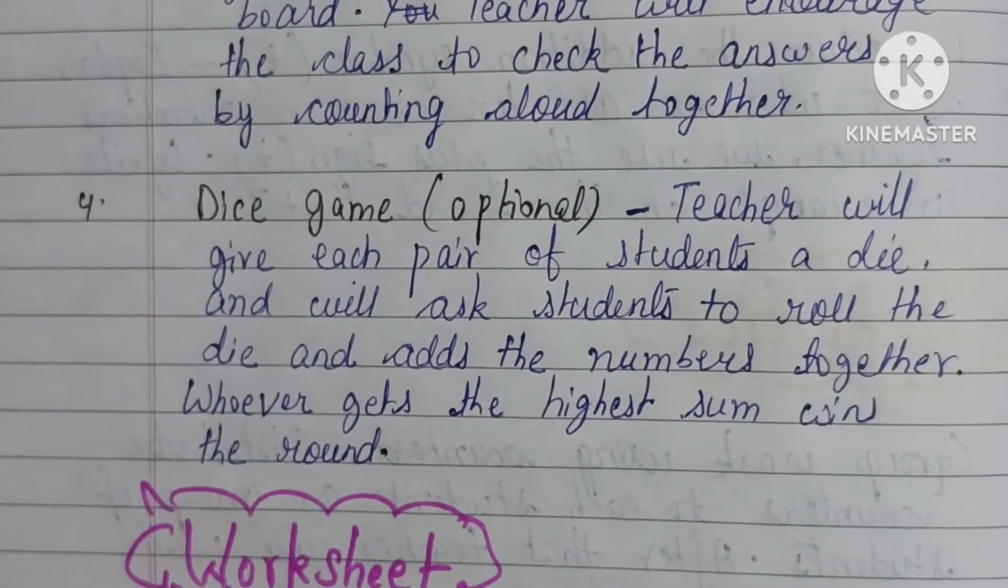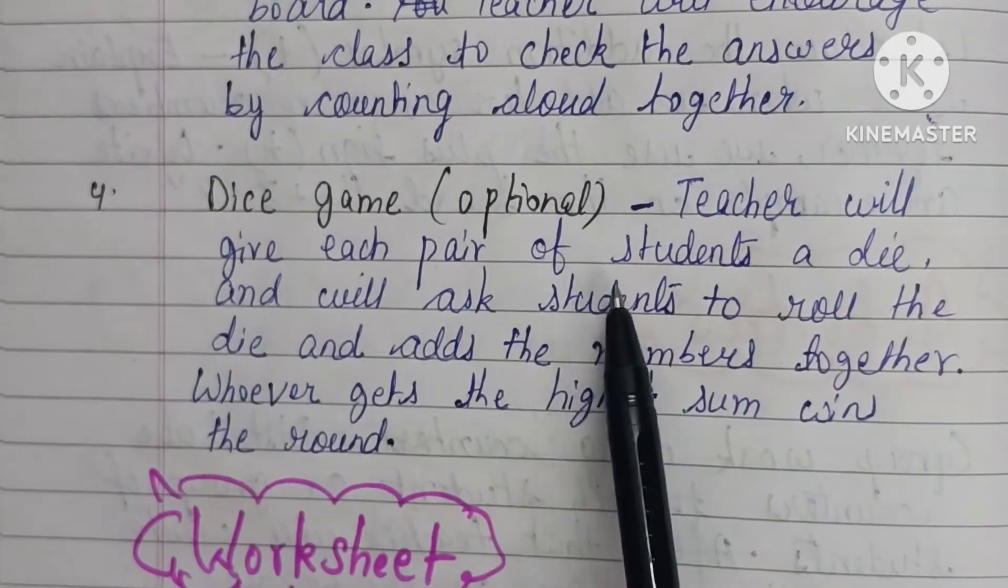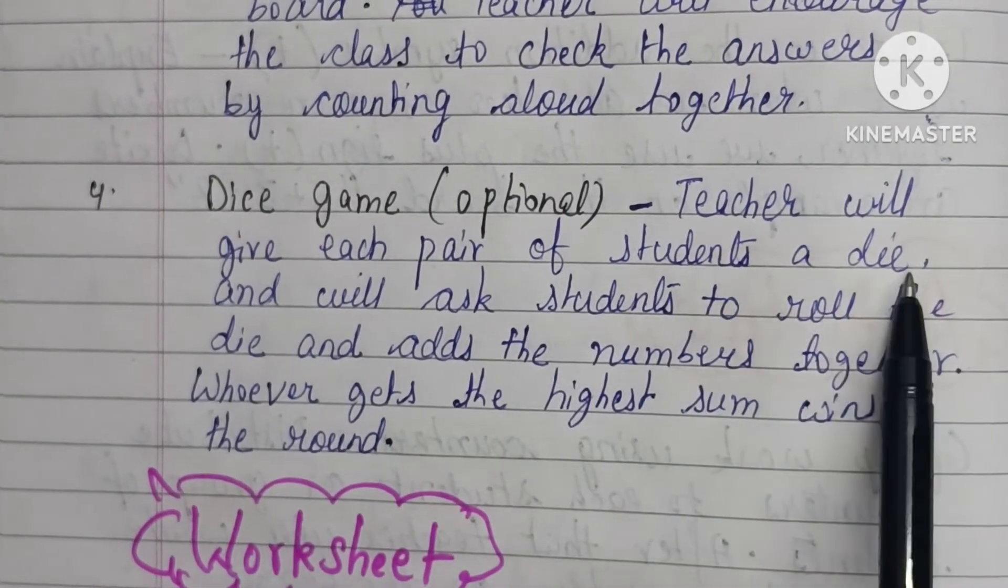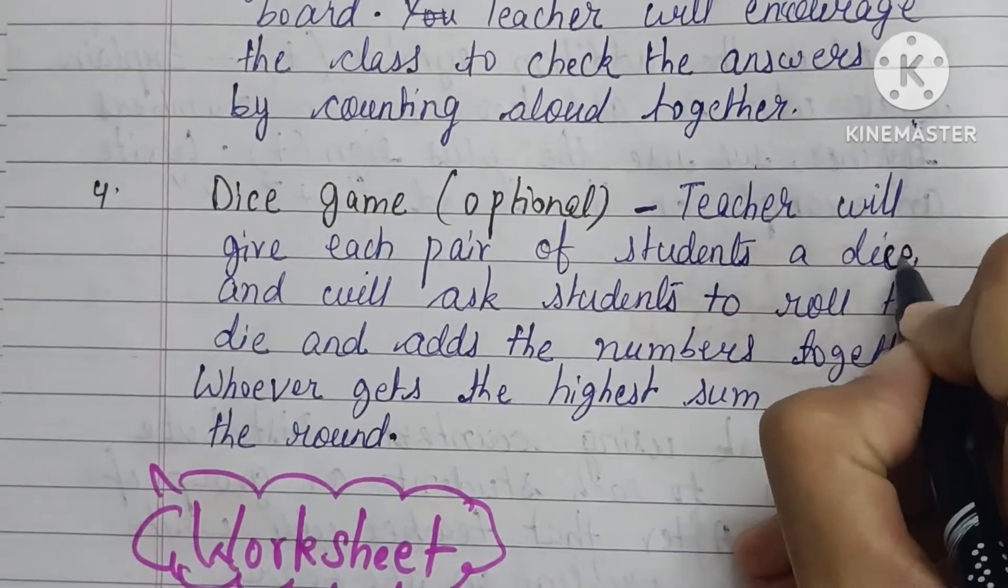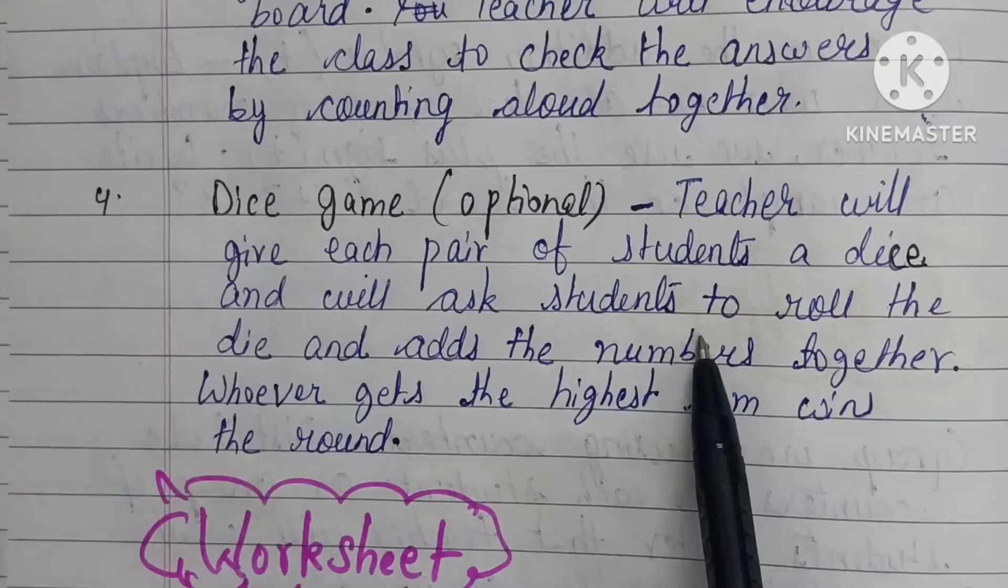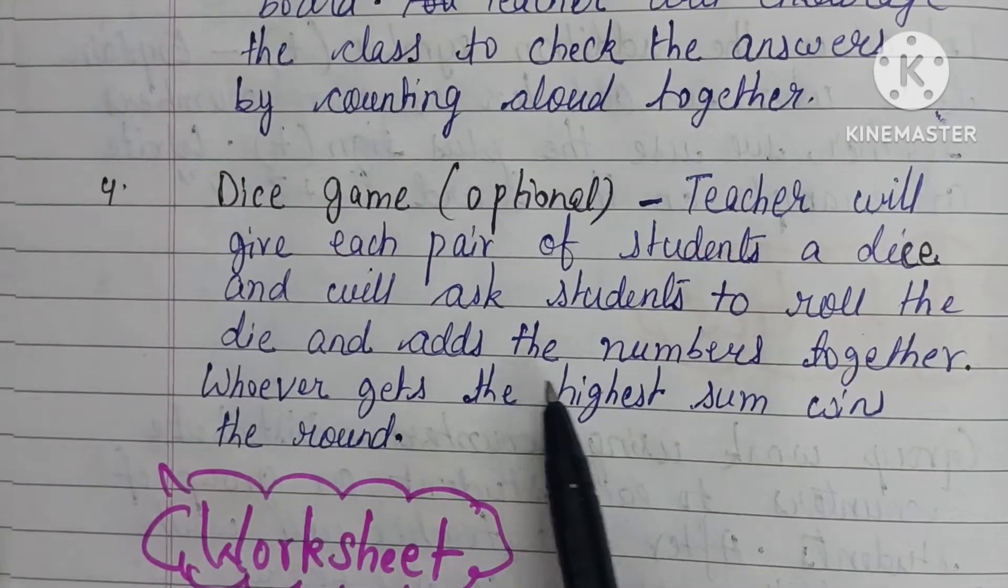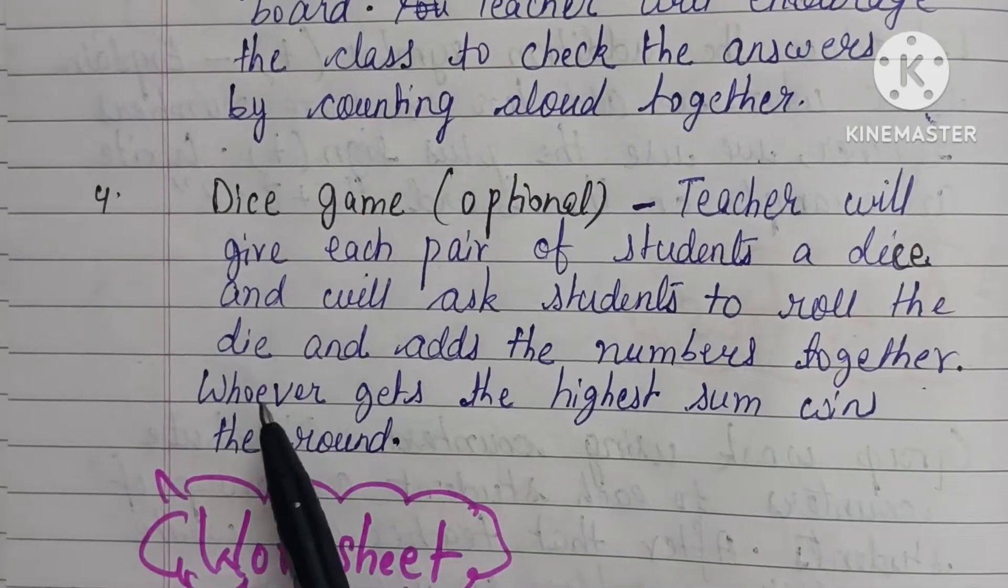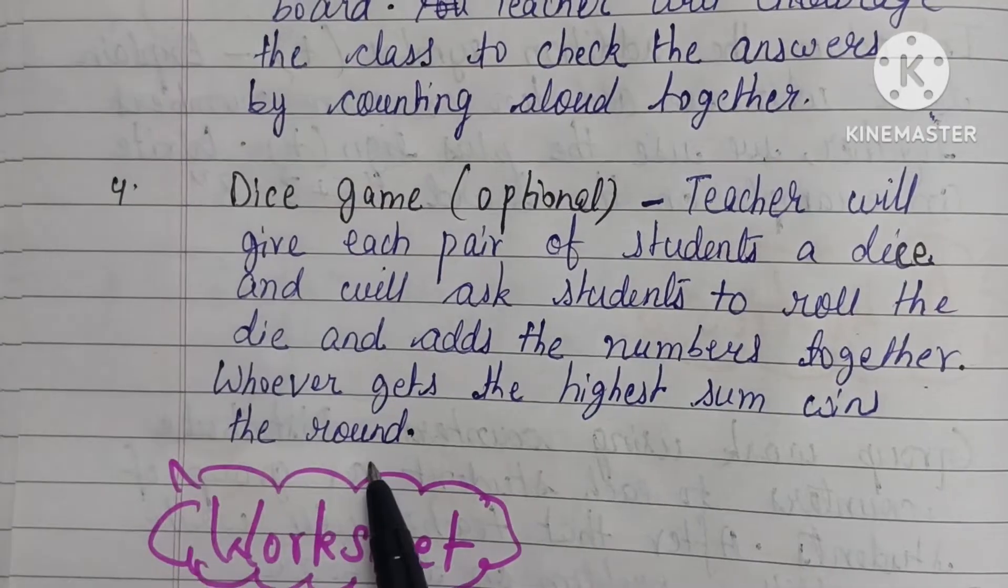Next is dice game, which is optional. Teacher will give each pair of students a dice and will ask students to roll the dice and add the numbers together. Whoever gets the highest sum wins the round.